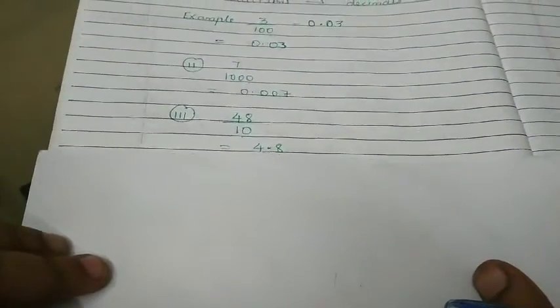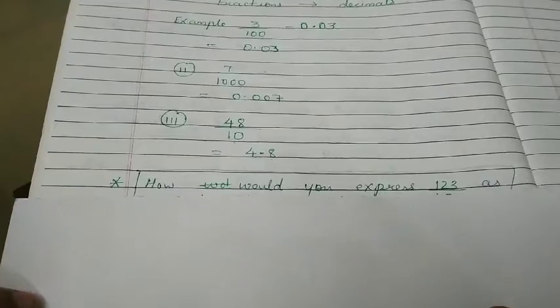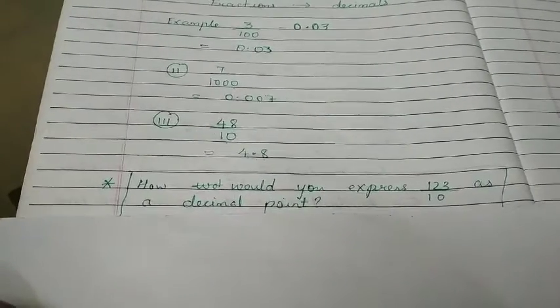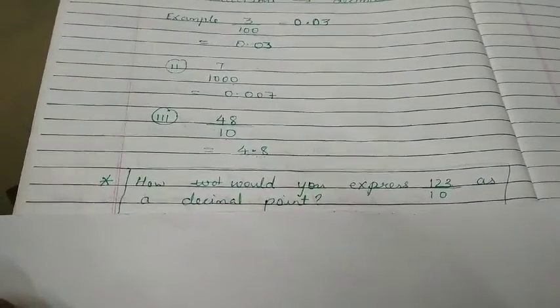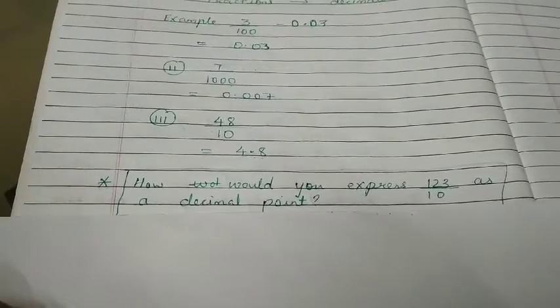Now, kids, test yourself. By solving this example, how would you express 123 upon 10 as a decimal point?